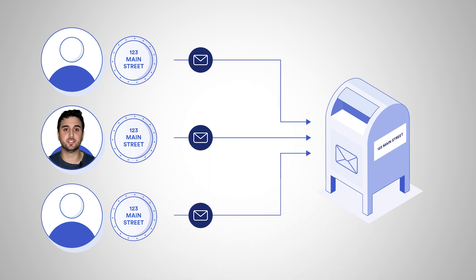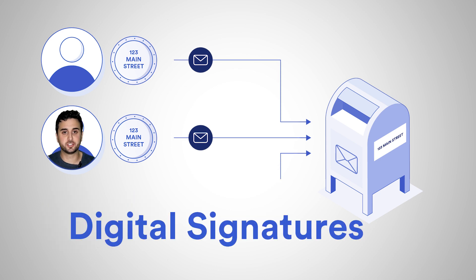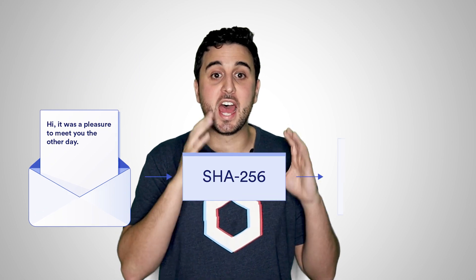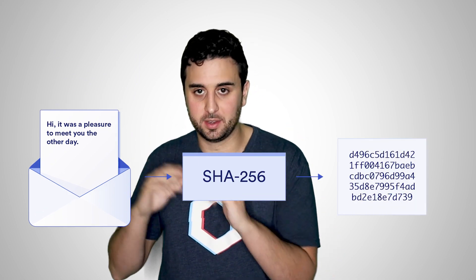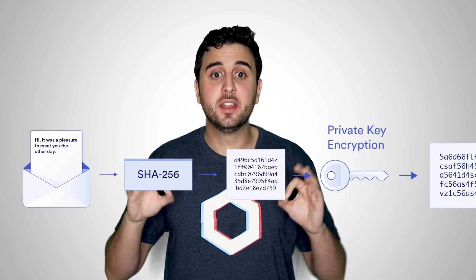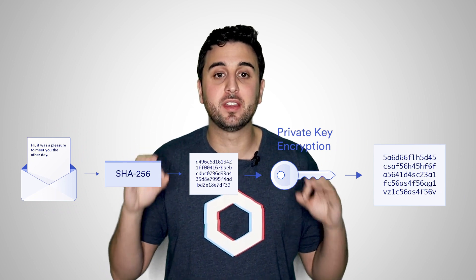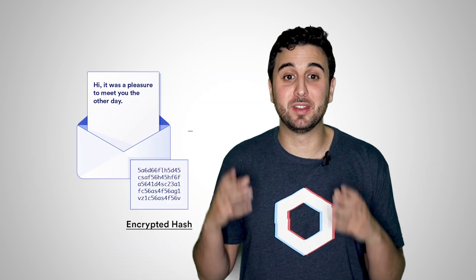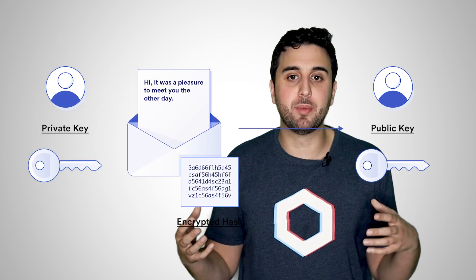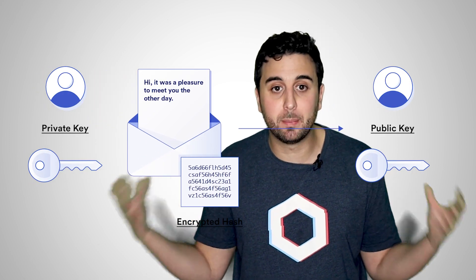Anyone who has a copy of this token can send messages to the private key holder. The practice of sending authenticated messages using asymmetric cryptography is called digital signatures. To send a message with a digital signature, the private key owner must first create a hash of the message they wish to send. Then the private key holder encrypts the hash with their private key. The message, alongside the encrypted hash, is sent to a recipient who holds the public key.